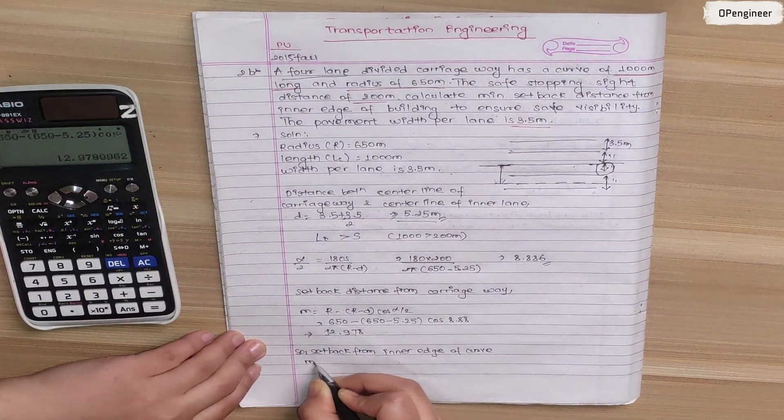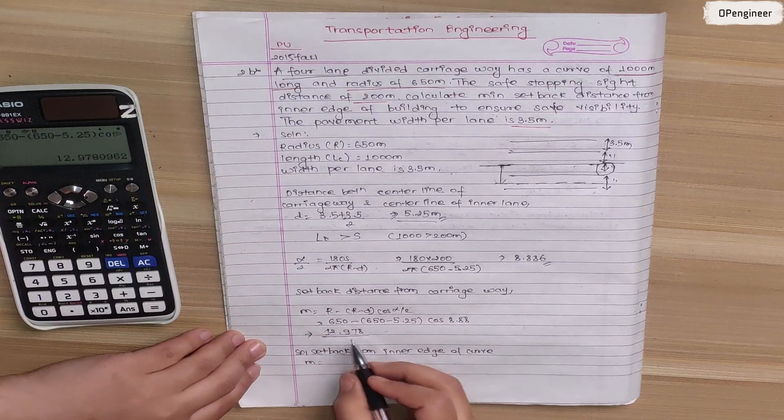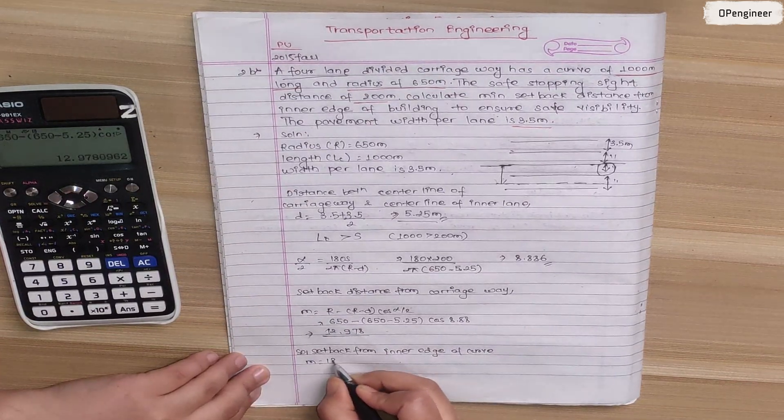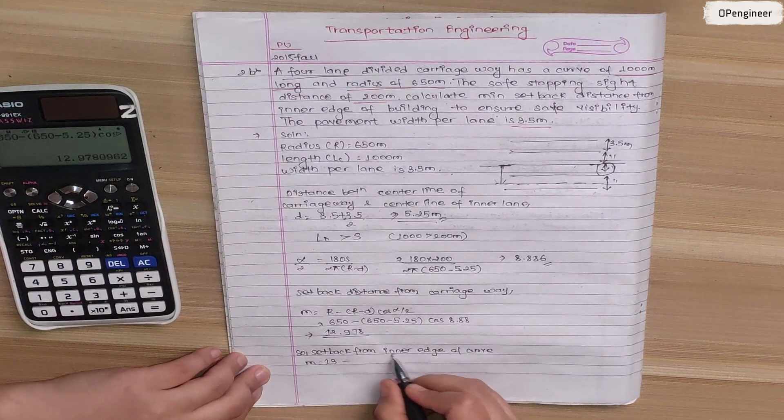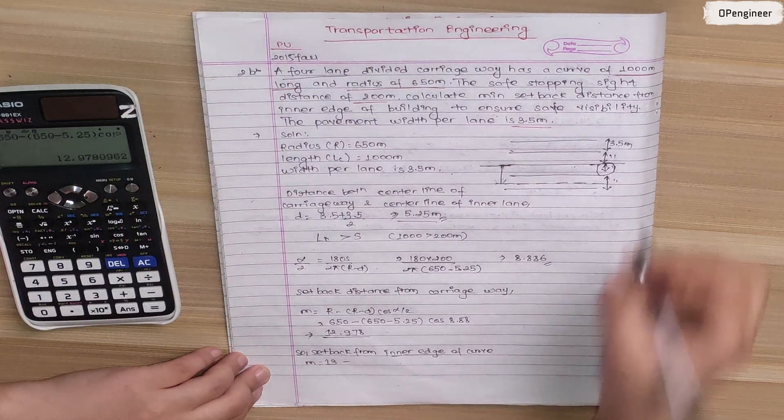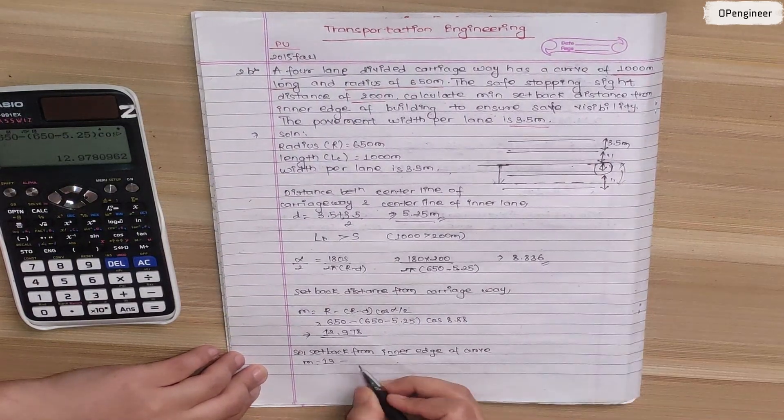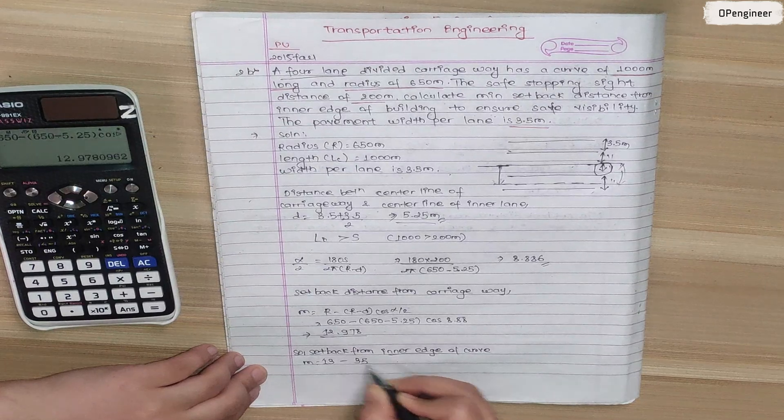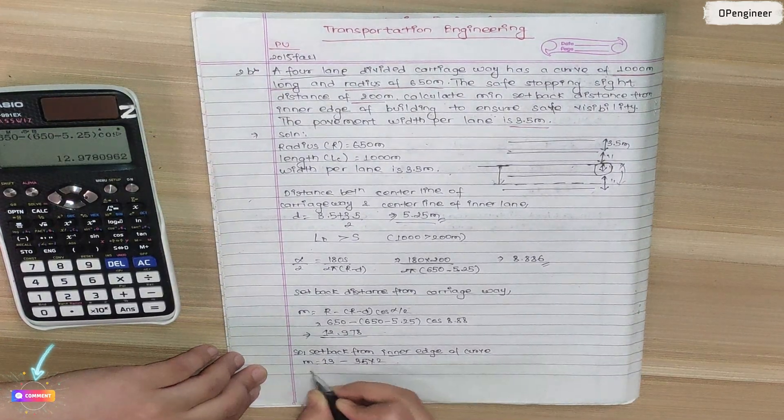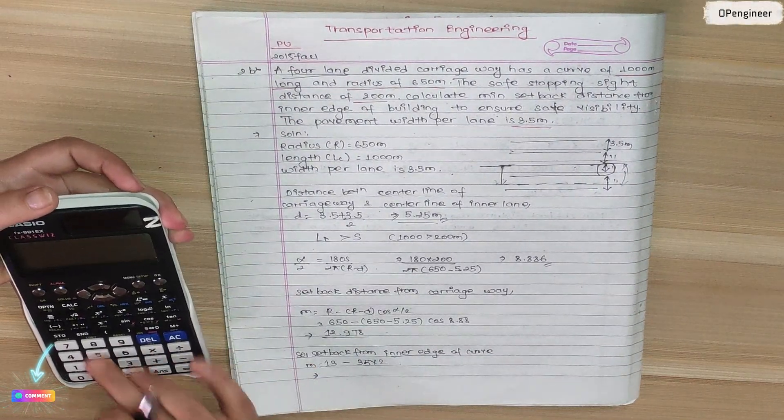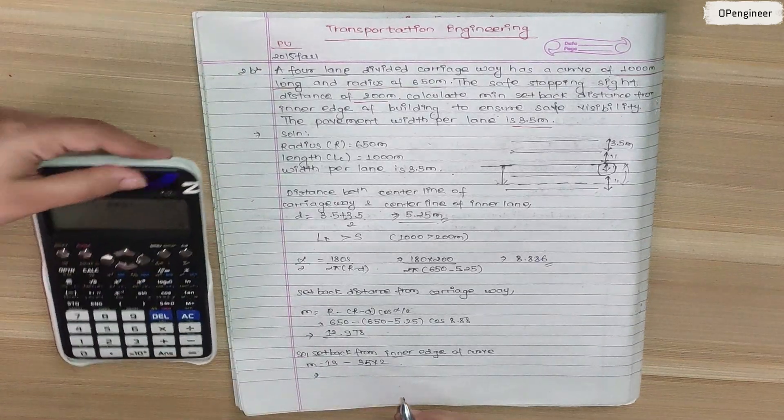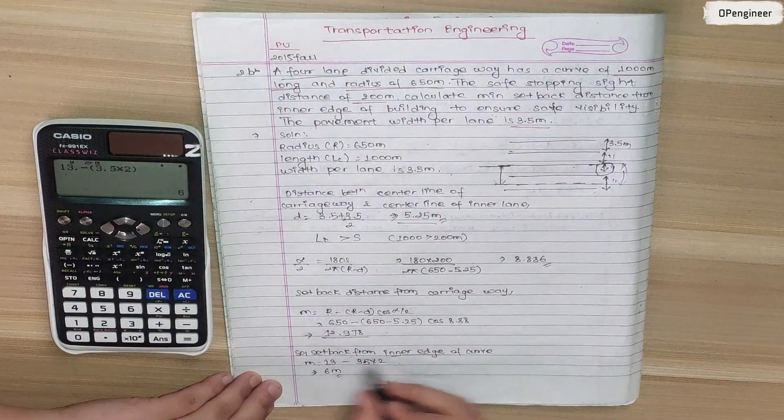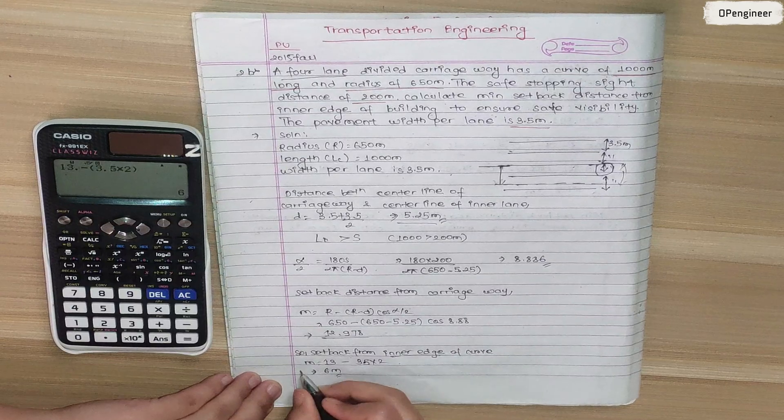To calculate setback distance from inner edge of curve: 12.978, approximately 13 meters, minus inner edge of curve which is 3.5 into 2. So 13 minus 3.5 into 2 equals 6 meter. This is the setback distance from inner edge of curve.